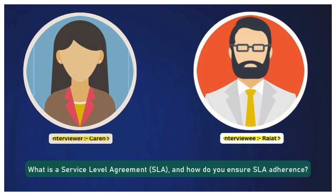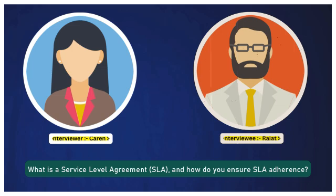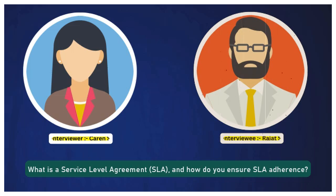What is a service level agreement — SLA — and how do you ensure SLA adherence? An SLA is a formal agreement between a service provider and the consumer or customer that defines the expected service levels — essentially the scope of the service. In my current organization, I ensure SLA adherence by regularly monitoring service performance metrics, identifying issues and bottlenecks, resolving them as soon as possible, and implementing corrective actions whenever necessary.